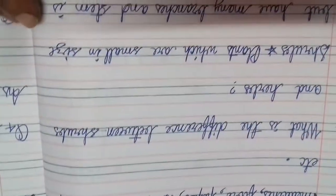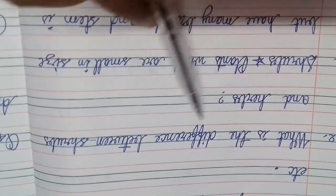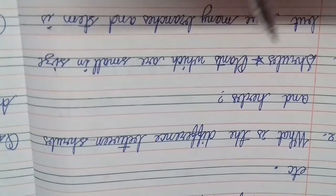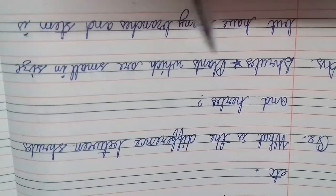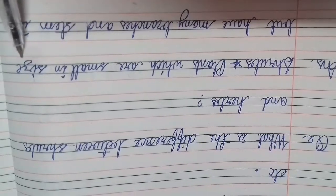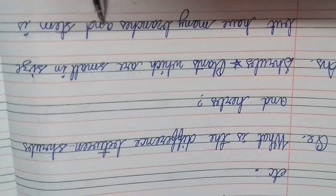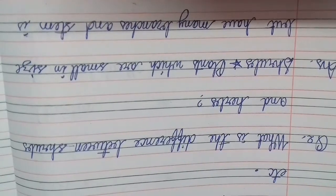Question number two: What is the difference between shrubs and herbs? Answer: Shrubs - plants which are small in size but have many branches and stem are called shrubs.